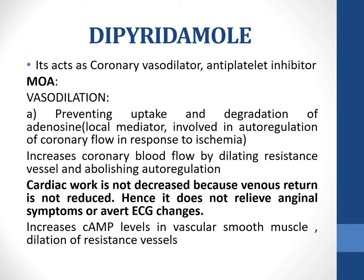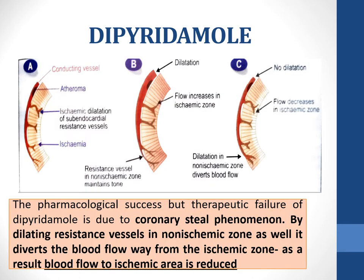Hence, dipyridamole does not relieve anginal symptoms or avert ECG changes. Another mechanism is that it increases cyclic AMP levels in vascular smooth muscle, leading to dilation of resistance vessels. An important concept is the pharmacological success but therapeutic failure of dipyridamole, which is due to the coronary steal phenomenon. By dilating resistance vessels in the non-ischemic zone as well, it diverts blood flow away from the ischemic zone, reducing blood flow where it is therapeutically needed.